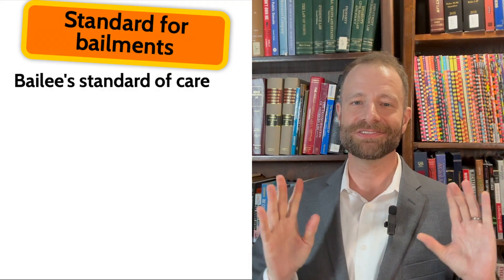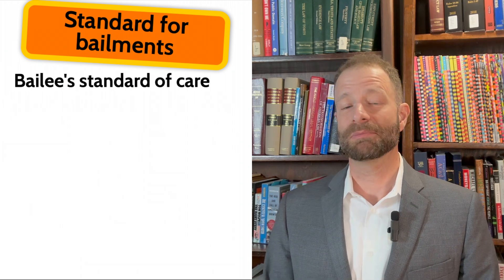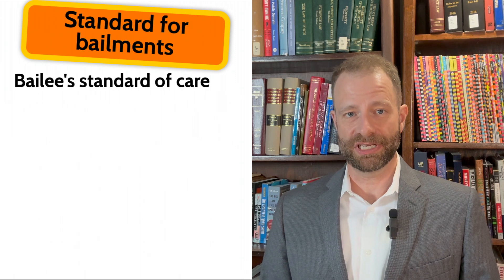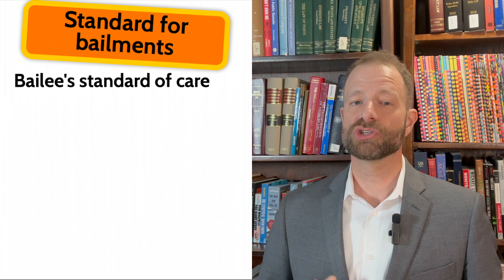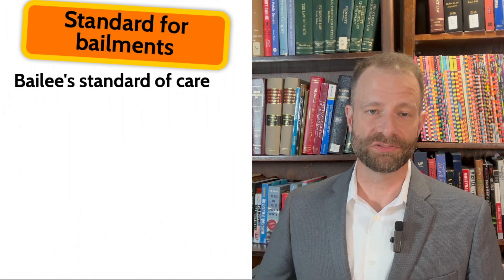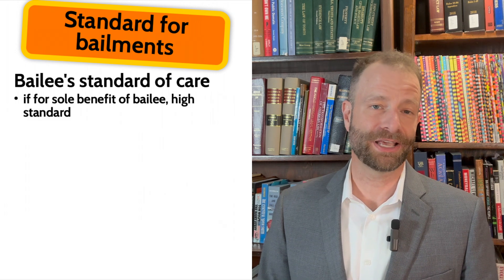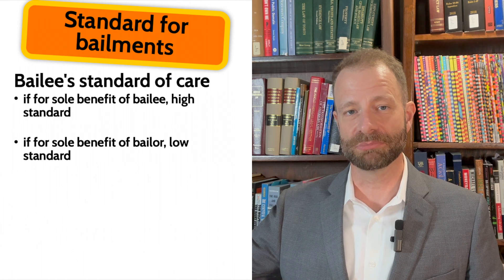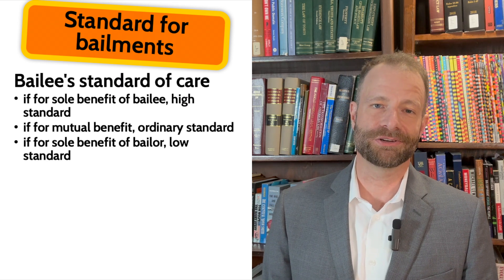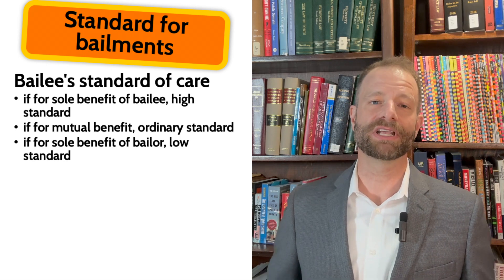Here's the breakdown. For the bailee's standard of care — the scenario where I borrowed something from someone, I break it, and I get sued because I didn't take good care of it — there are three standards. It depends on whether I borrowed it solely for my benefit, solely for the benefit of the person I borrowed it from, or for the mutual benefit of both of us. If I borrowed it for my sole benefit, it's a high standard — I have to take really good care of it. If I borrowed it solely for the bailor's benefit, it's a low standard. And if I borrowed it for mutual benefit, it's an ordinary standard. So if you lend me your lawnmower to mow your lawn, I have the low standard because I borrowed it exclusively for your benefit.